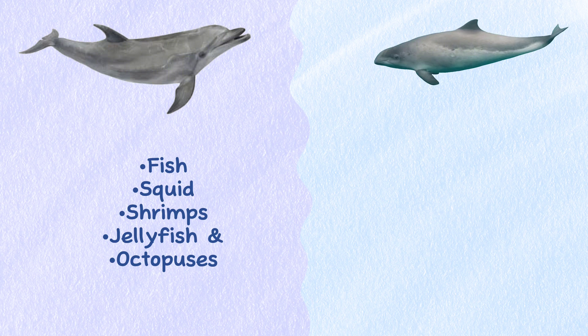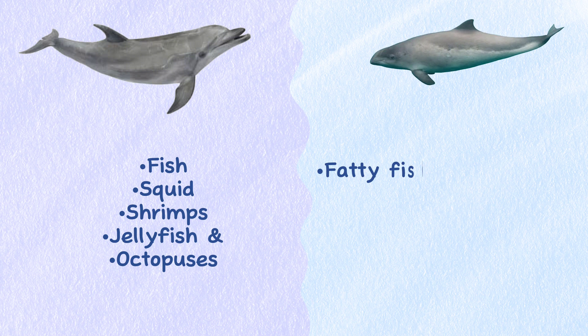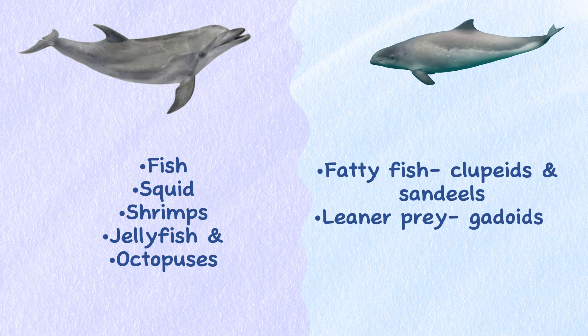Healthy harbor porpoises take a mixture of fatty fish and leaner prey. The big 4 in dietary terms are clupeids and sandeels with a relatively high fat content, and gadoids and gobies, which are leaner prey. Occasionally, they will eat squid and octopus.